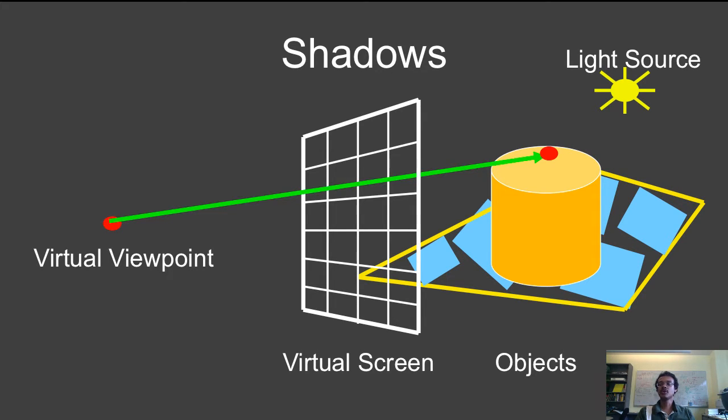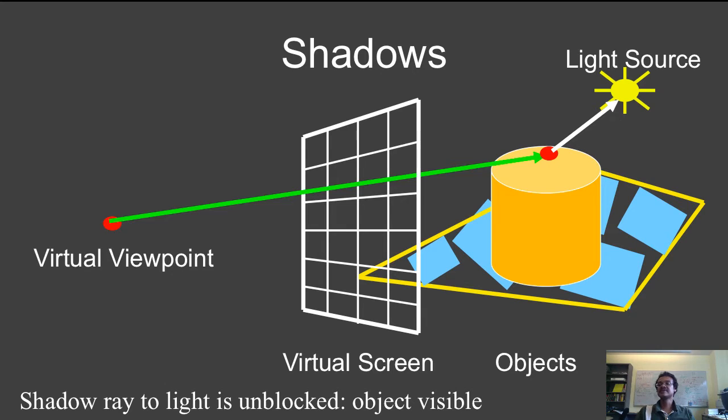I've added a light source, so I shoot a ray from the camera to the cylinder. And now, to find shadows, I have to shoot a ray from there towards the light source. In this case, the shadow ray hits the light source, so it's unblocked, and the object is therefore visible to the light source.